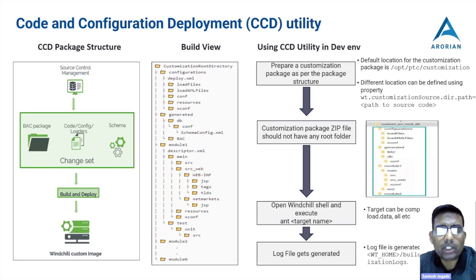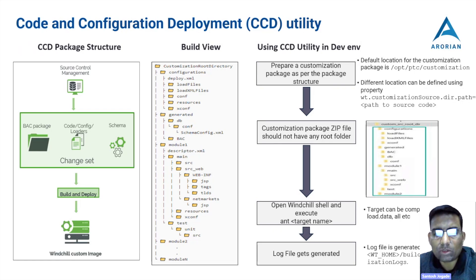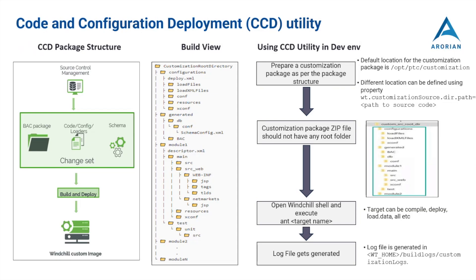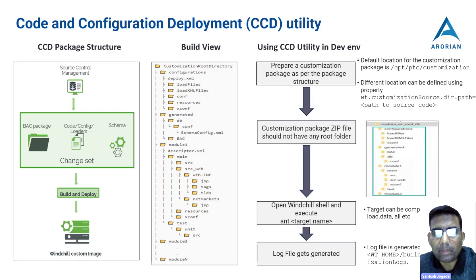When ready with the deployment package: first, prepare the directory structure with all files placed correctly. Then prepare the zip file, making sure it does not have a root folder. Once the zip file is ready, execute the ANT command specifying the zip file location and the target action — which can be compile, deploy, load, or all. Based on the ANT action, log files are generated showing whether the build was successful or failed, with detailed messages in the customization logs file.